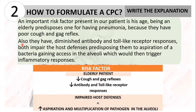Let's read an example. An important risk factor present in our patient is his age. Being an elderly predisposes one for having pneumonia because they have poor cough and gag reflex. Also, they have diminished antibody and toll-like receptor responses, and both impair the host defenses, predisposing them to aspiration of bacteria, gaining access in the alveoli, which would then trigger the inflammatory responses. This can now easily be converted into a visual representation of the CPC.